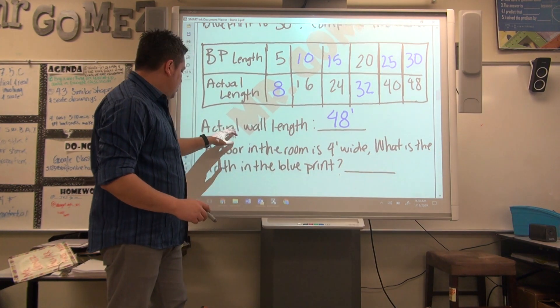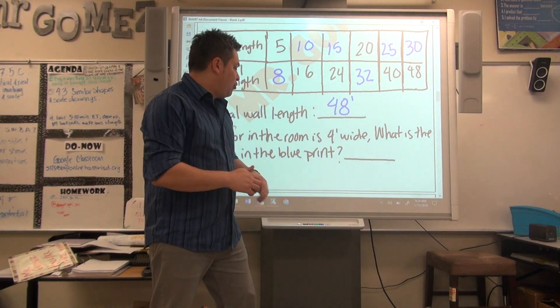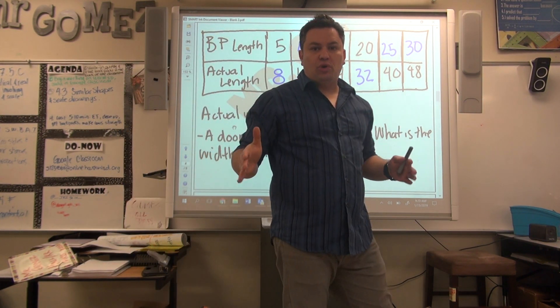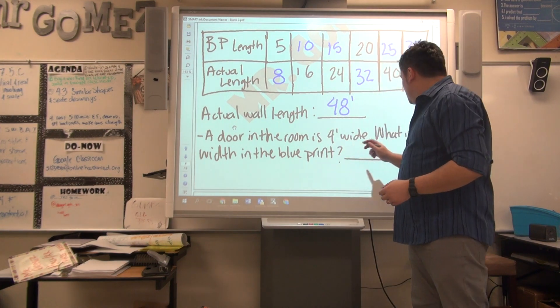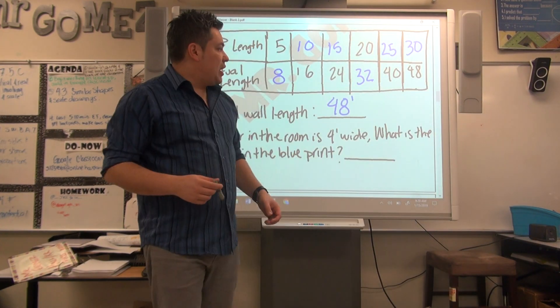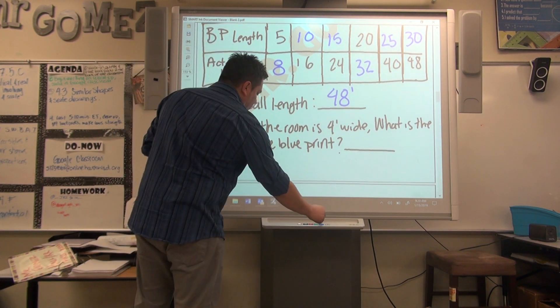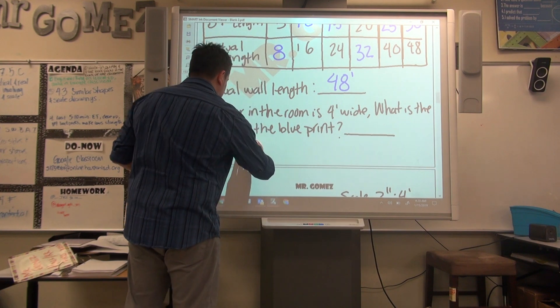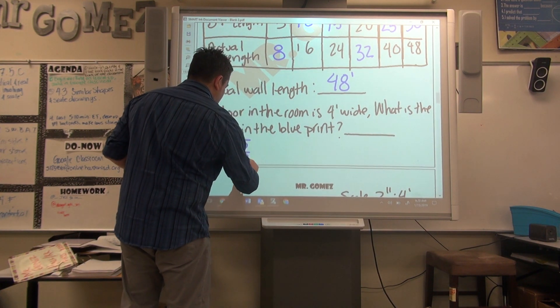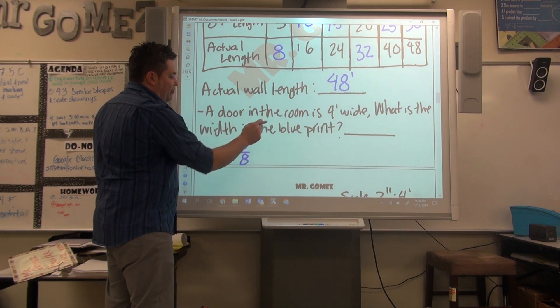Now, a door in the room is 4 feet wide. The actual door is 4 feet wide. What is the width in the blueprint? So we have 5 to 8, correct?